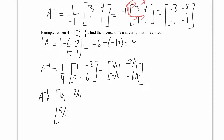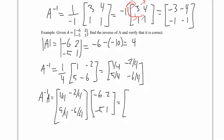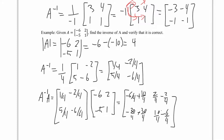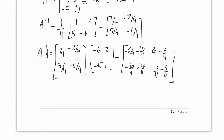Multiplying A inverse by the original matrix: one-quarter times negative 6 plus 10 quarters gives 4 quarters, which is 1. Two quarters minus two quarters is 0. Negative 30 quarters plus 30 quarters is 0. And 10 quarters minus 6 quarters gives 4 quarters, which is 1. So the result is the identity [1, 0, 0, 1] — verified!